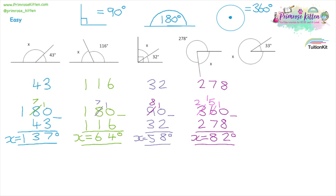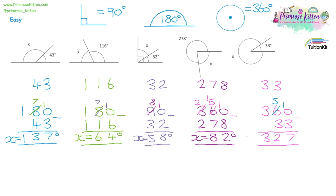Moving on to question five. The angle we've been given is 33 degrees, and the total is 360 degrees. So we're going to take away 33 from 360. Make sure you line up the tens and units. We have to borrow one at the start: 10 take away 3, 5 take away 3, and 3 take away 0. Our missing angle x is 327 degrees.